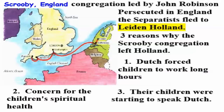They didn't like being persecuted in England. They were Separatists because they didn't like the Anglican church — they thought it was too much a pope-controlled church. So they went to Leiden, Holland, and lived there for a long time. But they didn't quite like living in Leiden. They were English, not Dutch — they liked their English heritage. There were three reasons they left the Netherlands: number one, their children were forced to work long hours.